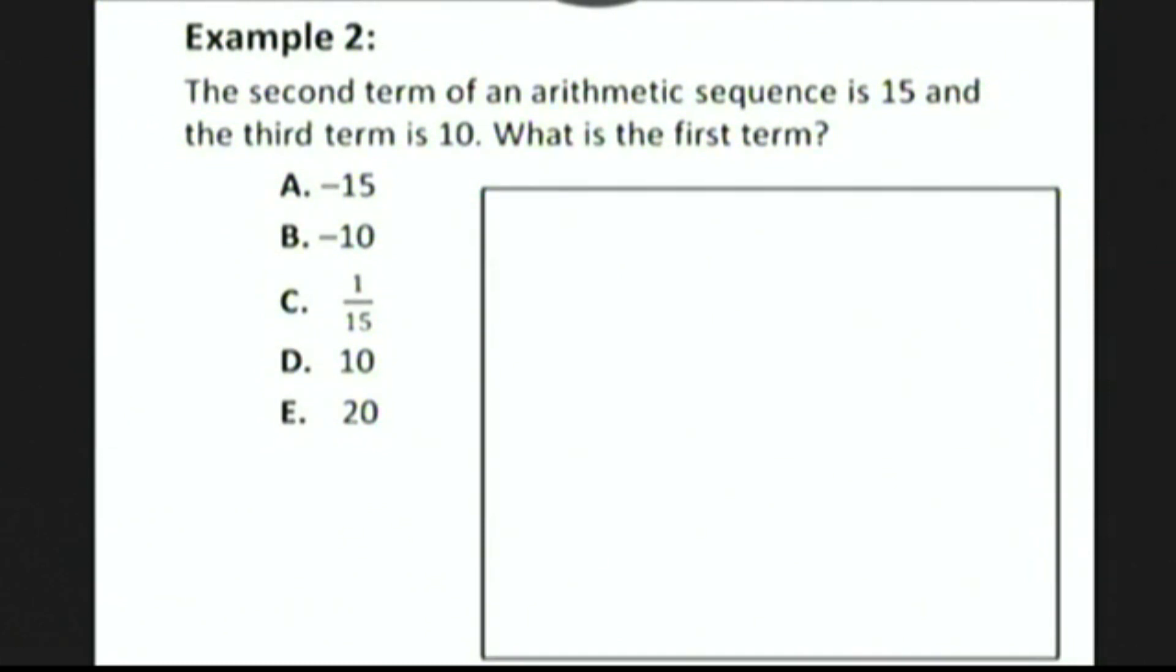The second term of an arithmetic sequence is 15, and the third term is 10. What is the first term? So let's write down the second term is 15, the third term is 10, and we want to figure out what the first term is.